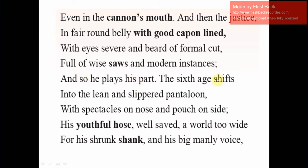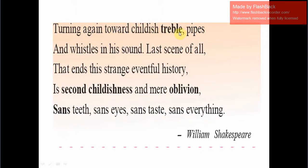'The sixth age shifts into the lean and slippered pantaloon, with spectacles on nose and pouch on side.' In the sixth age the person has retired and become thinner. The slippered pantaloon is a loose pant that does not fit properly. He has spectacles on his nose — reading glasses — and a pouch on his side, probably because of a catheter. 'His youthful hose, well saved, a world too wide for his shrunk shank' — he has become very thin. 'And his big manly voice, turning again toward childish treble' — he is three times weaker than before. He has pipes and whistles in his sound and cannot speak as he used to when young.